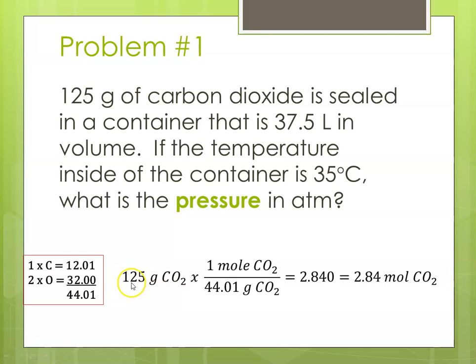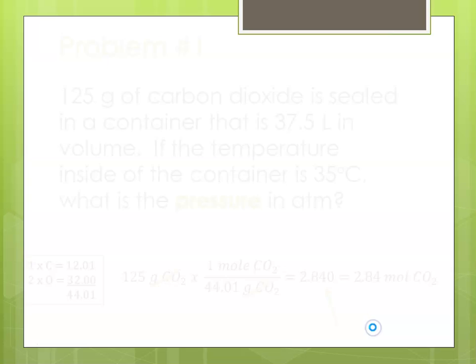So starting with the given, 125 grams of carbon dioxide, and then here's my molar mass. Grams of carbon dioxide cancels out. That in my calculator comes to 2.840. I need 3 significant digits, that would be the 4, so my number of moles of carbon dioxide is 2.84, and that is my n value.